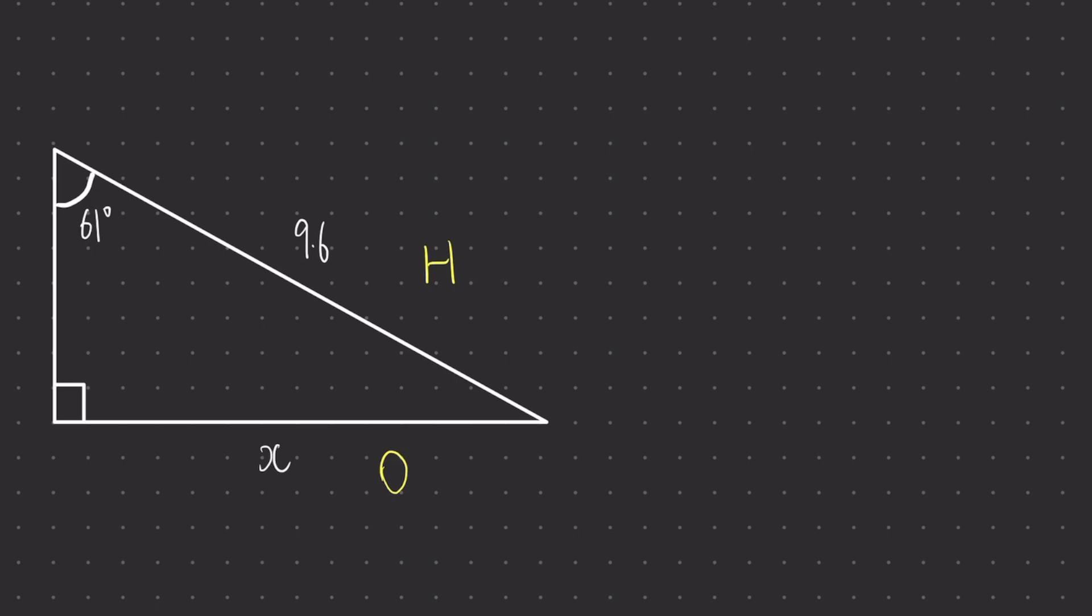And at this stage it's our job to go back to those three trigonometric ratios, the equations of sine, cos, and tan, and pluck out the correct equation that relates together the two sides in question. Here we have the opposite side and the hypotenuse.